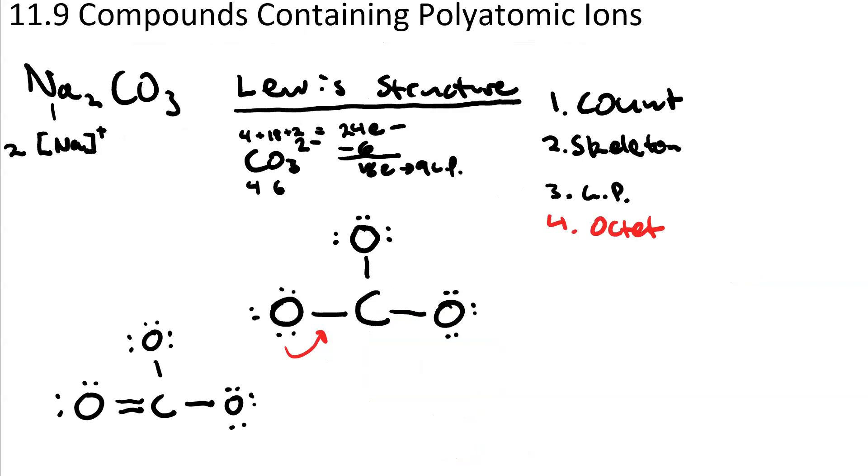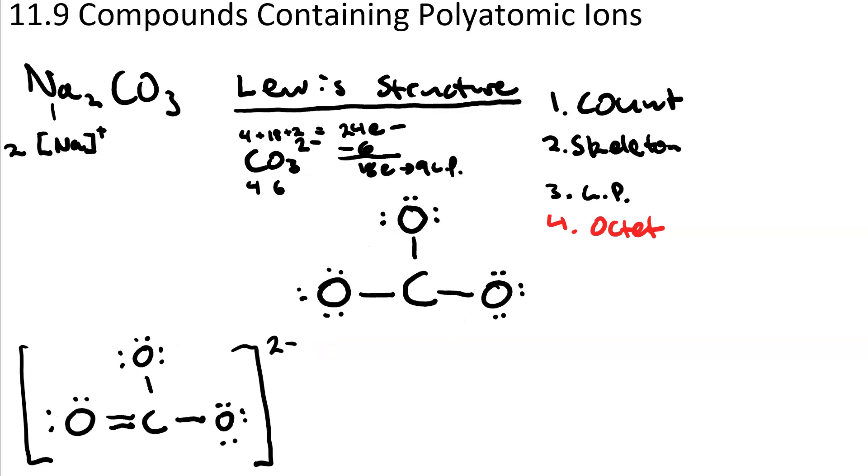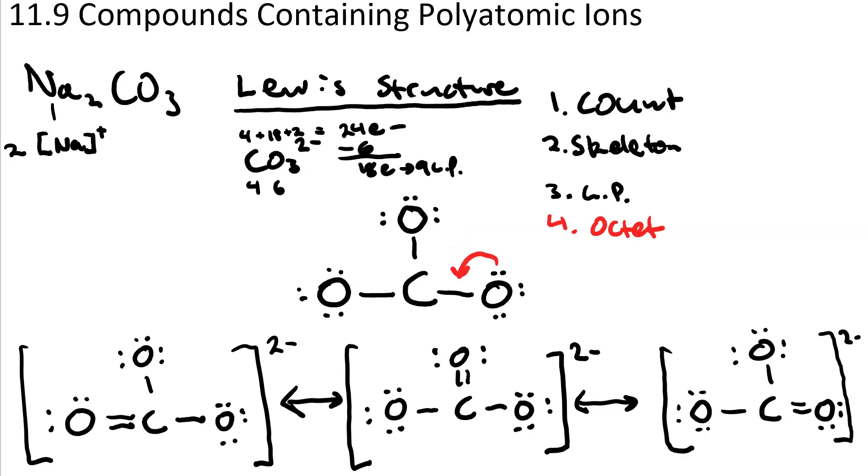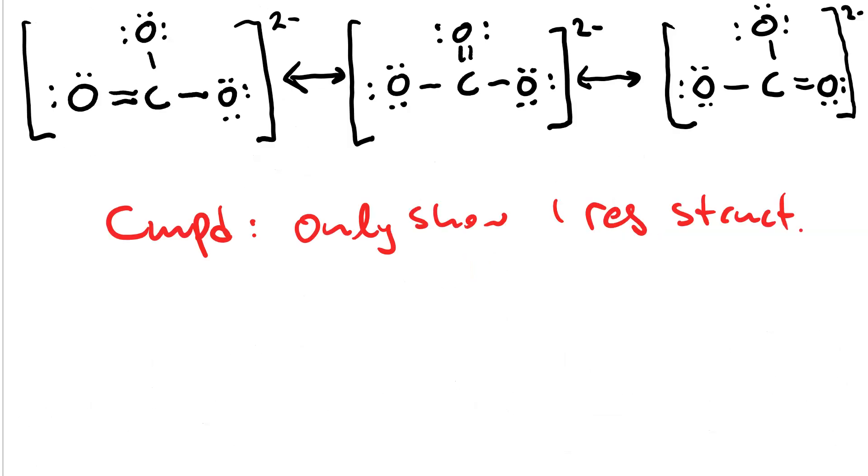Here's the resonance structure we get from using the oxygen on the left. Since it's an ion, we put it in brackets with the charge in the upper right hand corner. Here's the resonance structure we get if we take a lone pair from the middle oxygen. And here is the resonance structure you get if you take the lone pair from the oxygen on the right. When we're showing the Lewis diagram for the compound, we only need to show one resonance structure of the anion. Thus, we have our two sodium ions surrounding the carbonate.